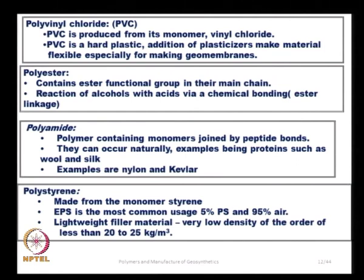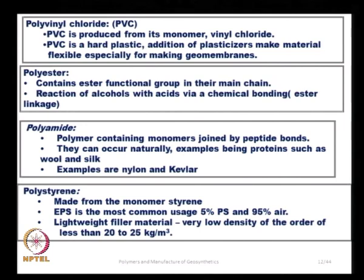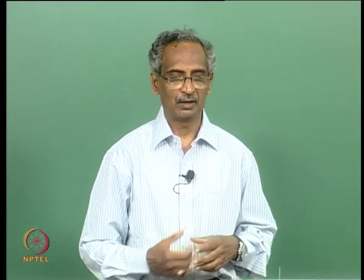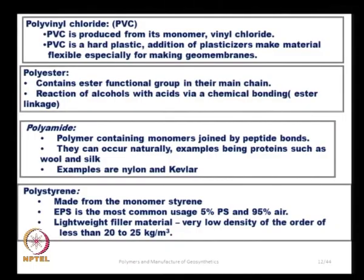Polyvinyl chloride (PVC) is produced from its monomer vinyl chloride. PVC is a hard plastic, and addition of plasticizers makes it flexible, especially for making geomembranes. We see PVC in the form of electrical conduits for domestic purposes, and some geomembranes are also made of PVC, requiring significant plasticizing materials to make them flexible.